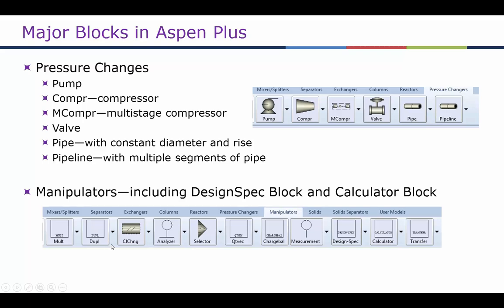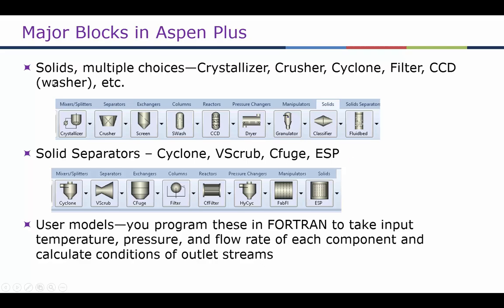There are also several manipulators used for calculations, such as calculator blocks and design specification blocks, which we will briefly look at in subsequent lectures. For solid operations, there are choices like crystallizers, crushers, cyclones, filters, and solid separators including cyclone, V-scrub, C-scrub, C-fuge, and electrostatic precipitators. Solid handling is limited here since most simple problems involve gas and liquid. You can also include user-defined models, defining your own blocks using programs like Fortran, which can then be included in the Aspen Plus simulation.